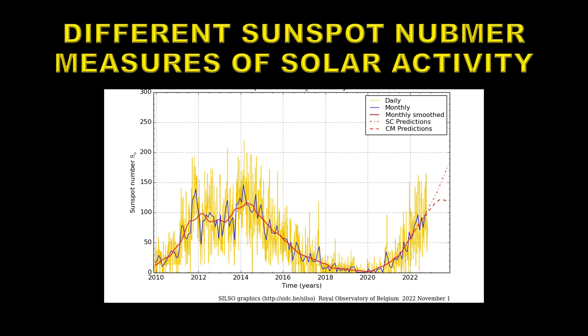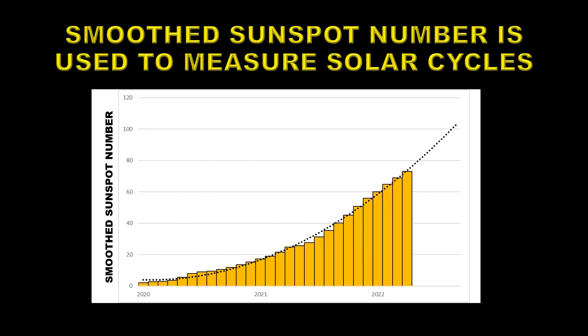The peak of the solar cycle is determined by the smooth sunspot number, and so is the minimum. On the left you can see two dashed curves which are predictions based on different types of models. Even though we're only two to three years away from the maximum, the two best-established models vary quite considerably in their predictions. One dashed curve shows a maximum of just over 120, whereas the dot-and-dash curve predicts a maximum of at least 175. So even close to solar maximum, the models still don't agree.